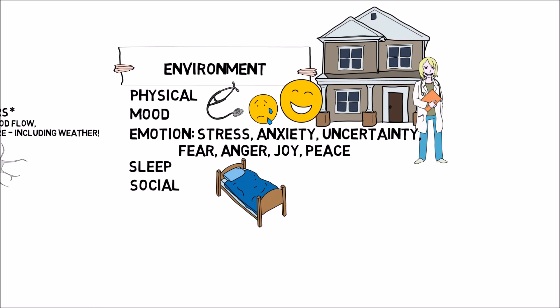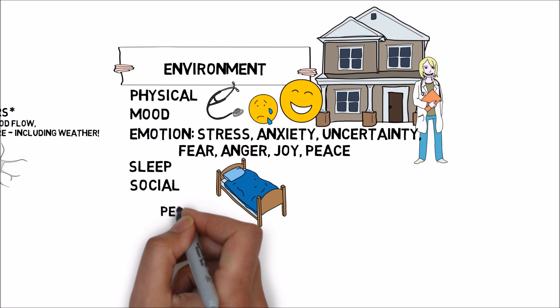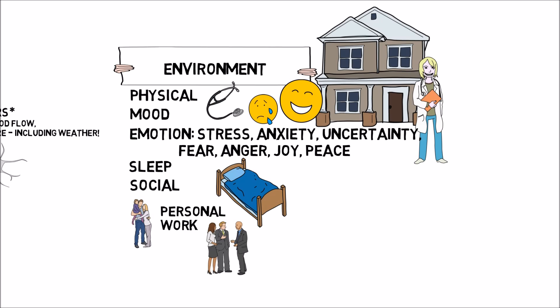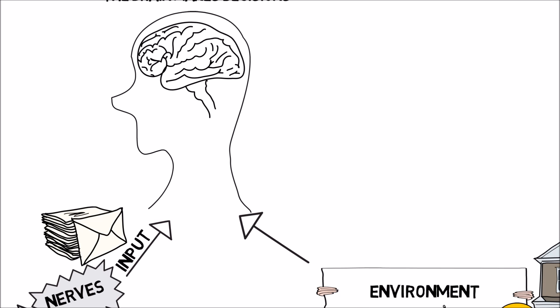We also know that the social environment is very important. This includes things about our personal life — family, friends, but also our work. We spend a lot of time at work. The best example of this is: if you stub your toe, normally it would hurt. But if you're around people where it would be embarrassing to express your pain, you're going to hurt less. There are countless other examples of how the people around us and our social engagement can influence our pain, our function, and our ability to do life.